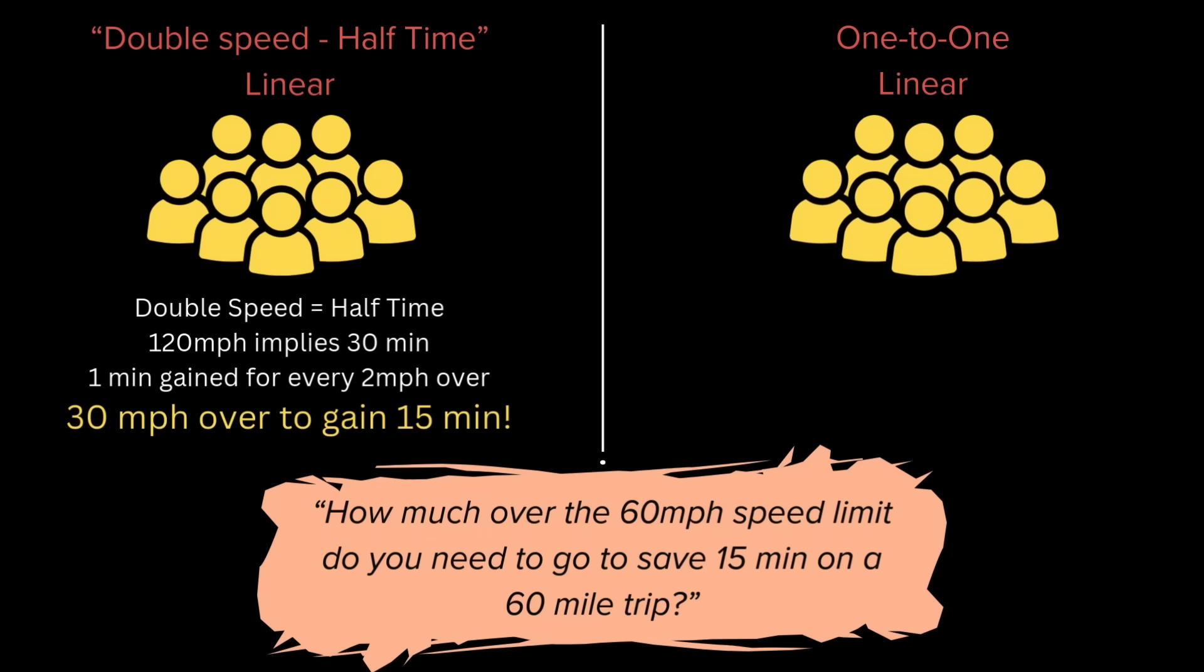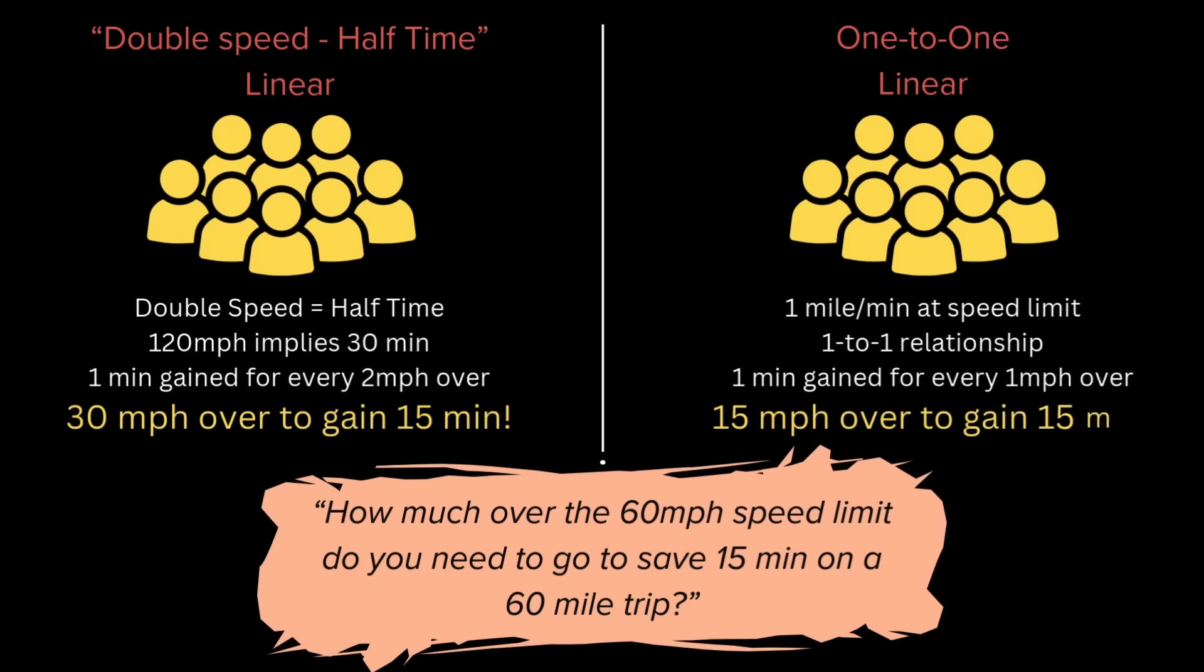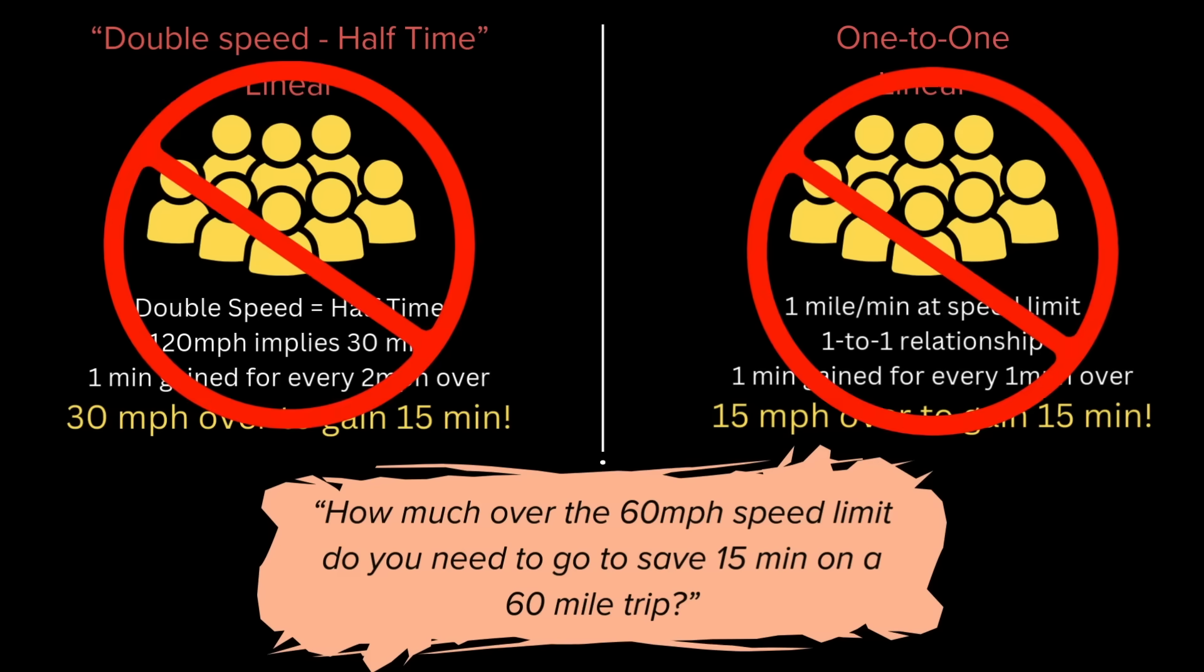The other group was even more linear, like 1 to 1 linear. So they said 60 miles at 60 miles per hour gets me there in 1 hour, so I must go 15 over to make up 15 minutes.